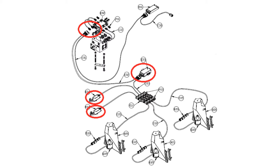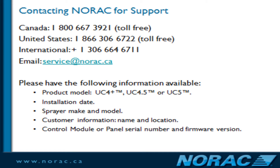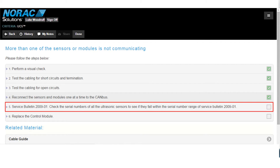If any height or roll sensors are found to be faulty, simply turn off the power, unplug and remove them, and continue with the test. Any faulty component except for the control module can be replaced without having to run a new automatic setup. This concludes the communication test. If your problem is still present, reference Service Bulletin 2009-01 as listed in Solutions.